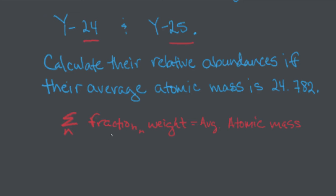We've got the fraction of the 24 isotope, here I'll just make it F for fraction, times the weight, in this case we're going to say it's 24, plus the fraction of the 25 times the 25 AMUs. And that's going to equal the 24.782. Well, how can this occur?